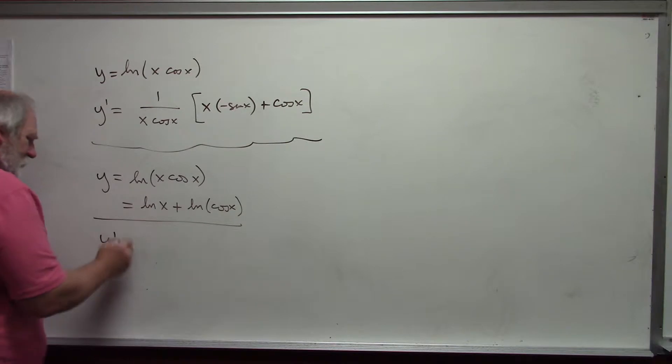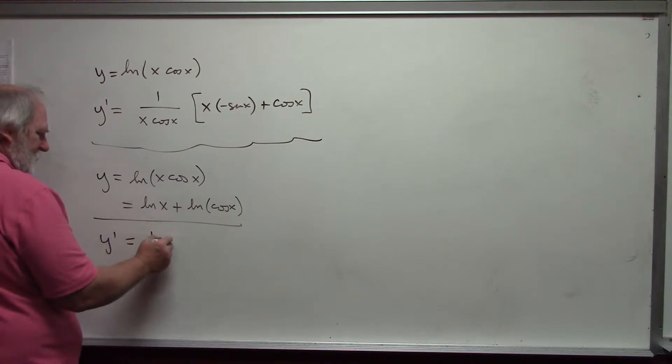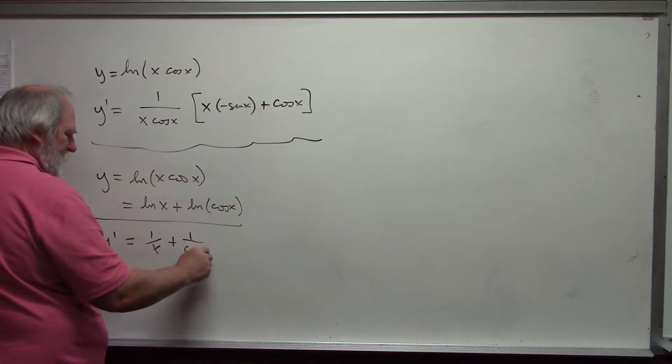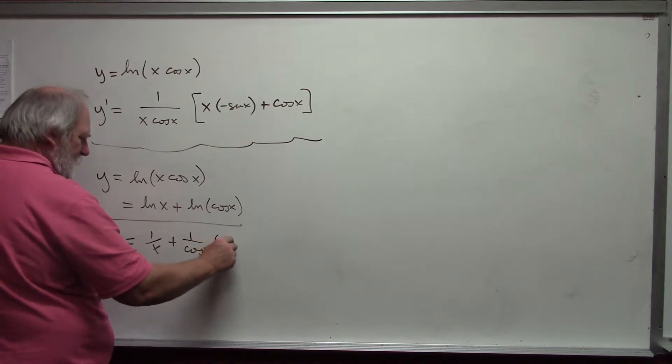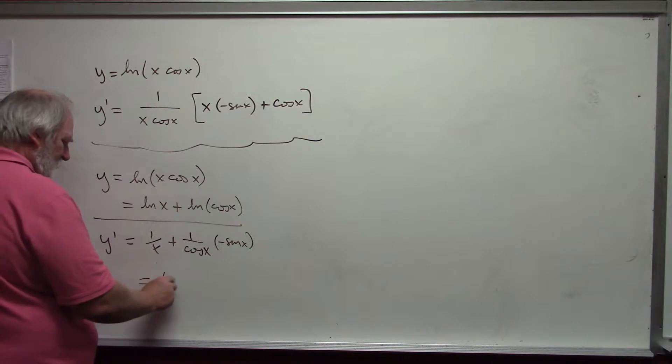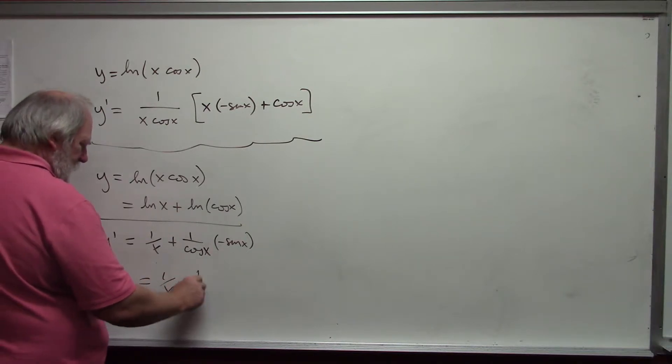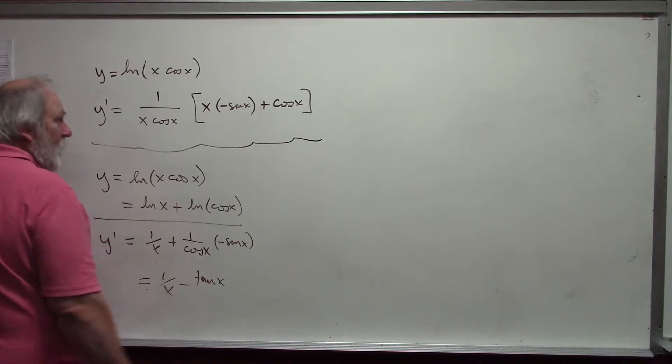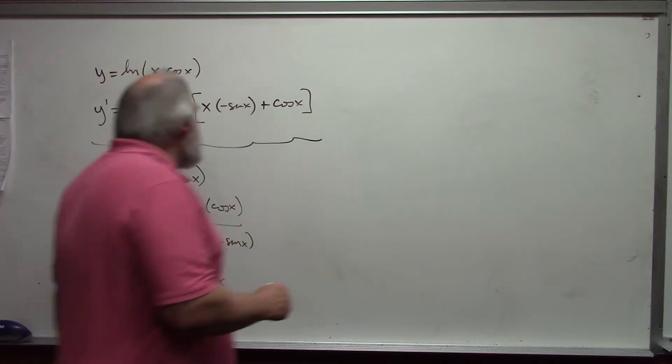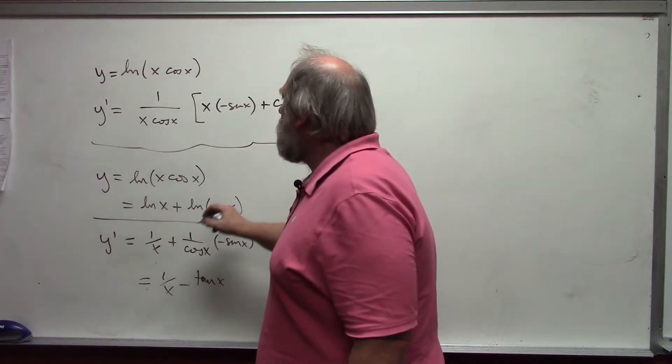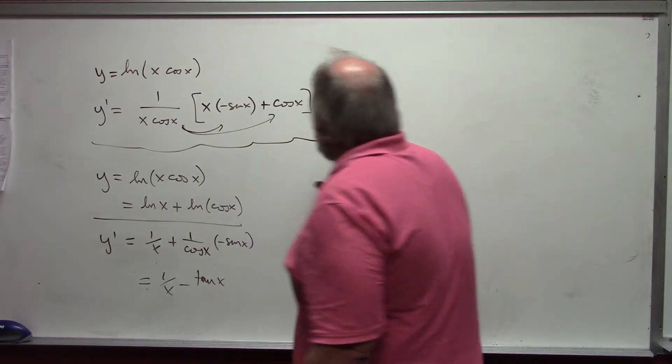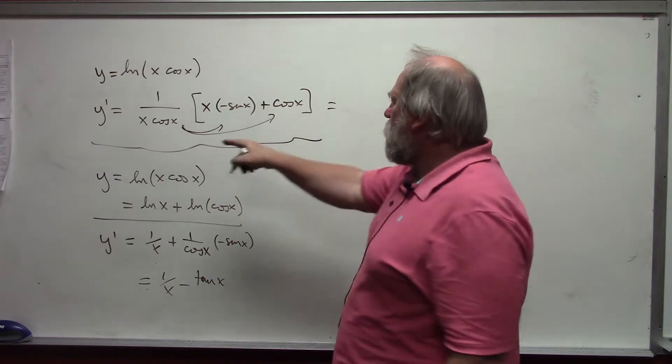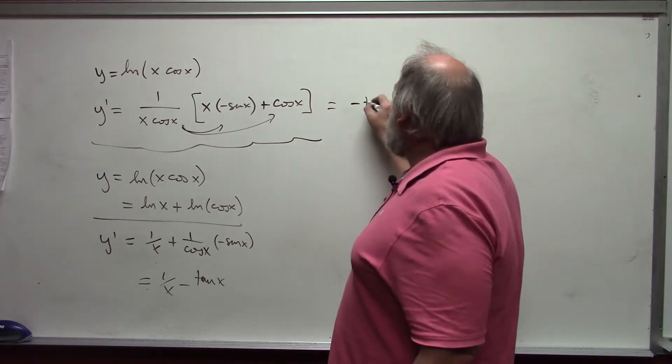And so now, my derivative is 1 over x plus 1 over cosine of x times negative of sine of x. Or, 1 over x minus tangent of x. Notice if I had distributed this through up here, I would have gotten x negative sine x over x cosine of x is negative tangent of x.